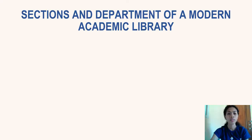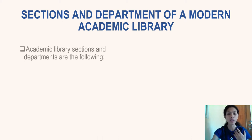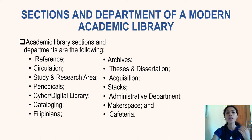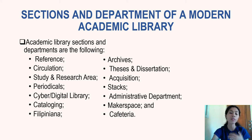These are the departments of a modern library which I incorporated into my design of the academic library blueprint. They include the reference section, circulation, study and research area, periodicals, cyber or digital library, cataloging, Filipiniana, library archives, thesis and dissertation department, acquisition, stacks, administrative department, maker space, and the cafeteria.